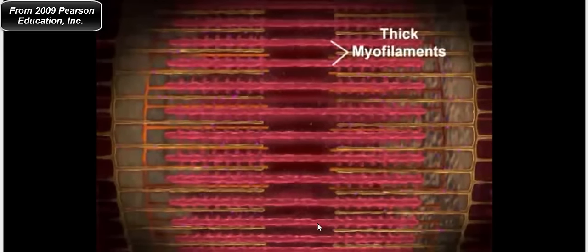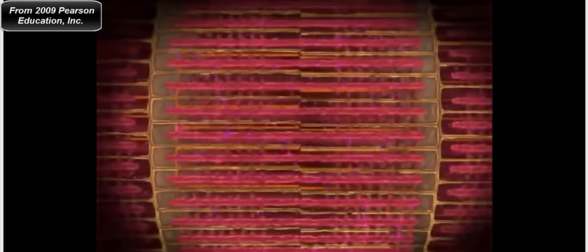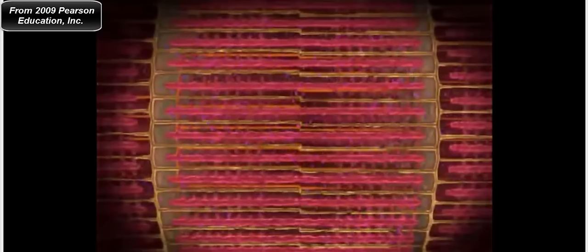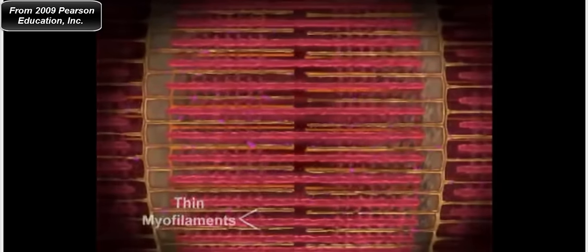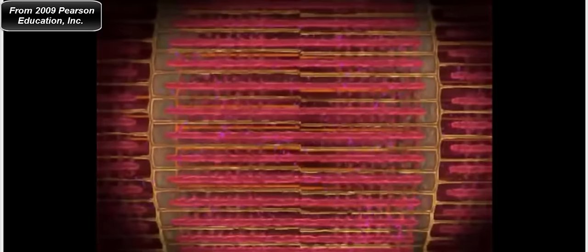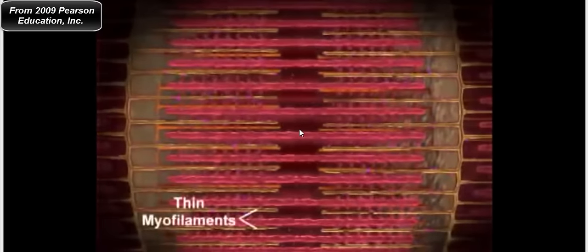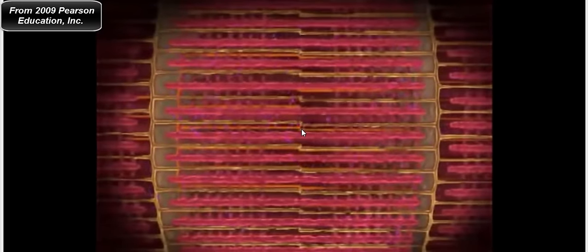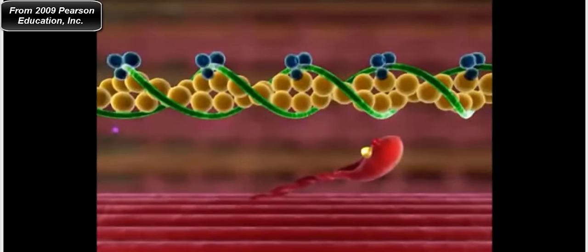The thick filaments are myosin and the thin filaments are actin. Notice how the sarcomere is shortening toward the M line. Those myosin heads, located on the thick filaments, are walking the thin filaments toward the M line. The thin filaments are being walked toward that line.